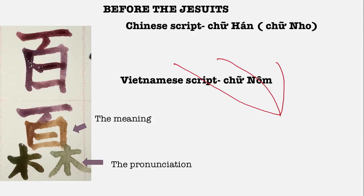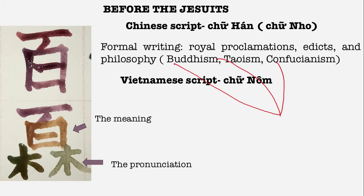Before the arrival of the Jesuits in the 17th century in Vietnam, we had two scripts. The first was the Chinese script, Chữ Hán, from the Han dynasty of China — we call it the script for the literati. We used Chinese script in formal writing; the king would use it for royal proclamations, ethics, and to study the big philosophies of the time: Buddhism, Taoism, and Confucianism. In the meantime, we also developed the Vietnamese script, Chữ Nôm.